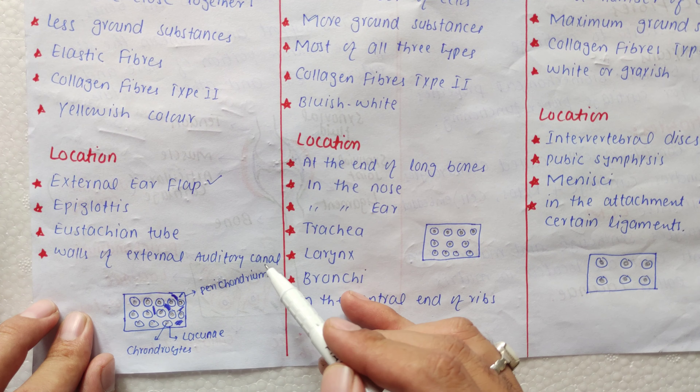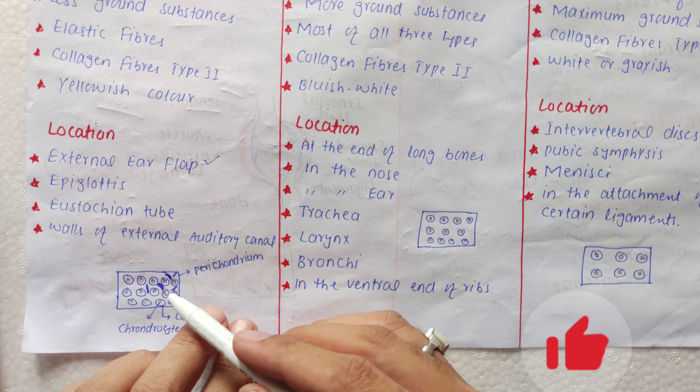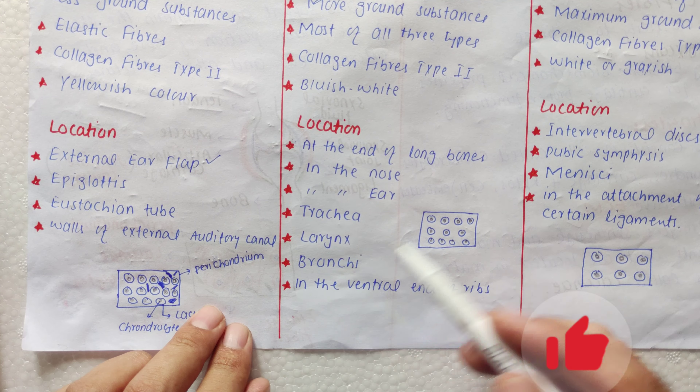دوسرے نمبر پر hyaline cartilage ہے۔ As compared to elastic cartilage، اس میں less number of cells ہیں کیونکہ cells ایک دوسرے سے تھوڑے فاصلے پر ہیں۔ اس کا مطلب ہے as compared to elastic cartilage اس میں more ground substances پائے جاتے ہیں۔ Hyaline cartilage تینوں types میں سب سے most common cartilage ہے۔